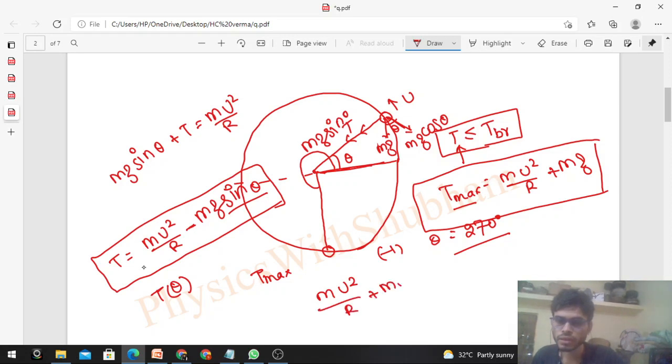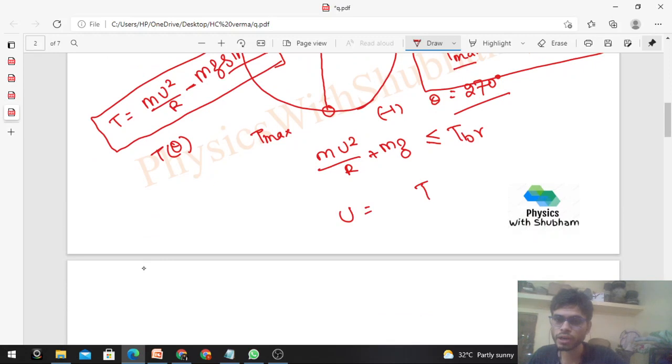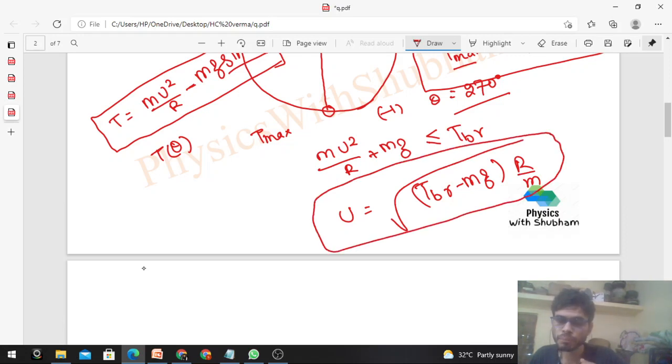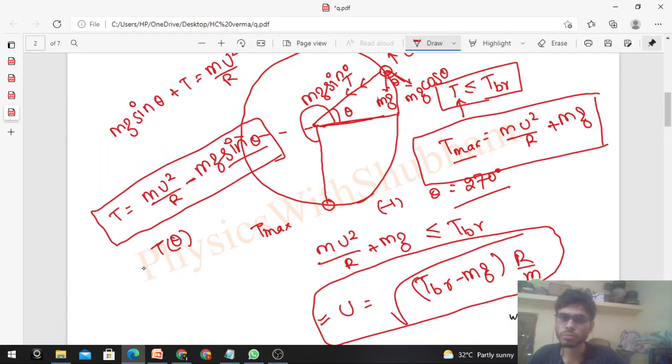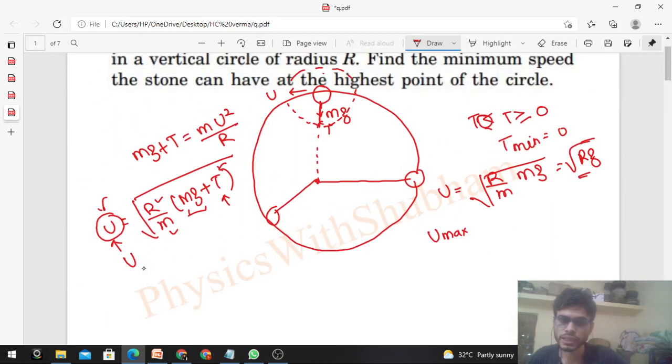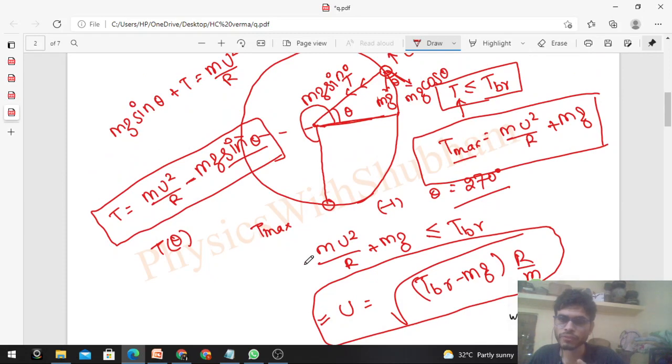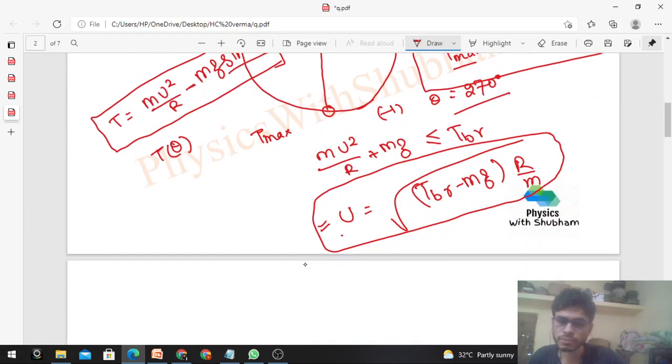So we just need: mu squared upon r plus mg, which is the maximum tension, should be less than or equal to the breaking tension. From here, find out the value of speed. The speed is square root of T breaking minus mg times r by m. This is the maximum possible speed at any point, so that if the particle moves in this vertical circle, it will not break at any point on this vertical circle. At every point it will be safe.